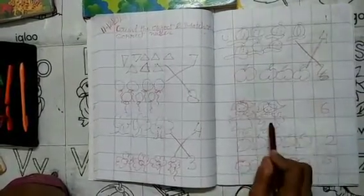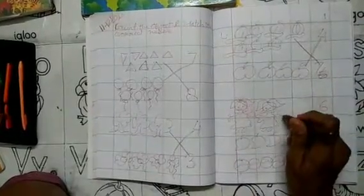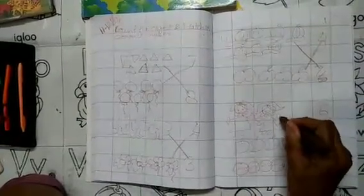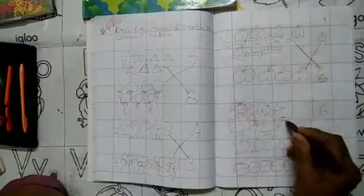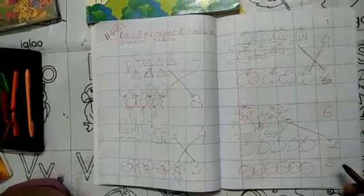1, 2 dolls. Where is the two number? Match the two dolls, two number. 1, 2, 3, 4, 5. Five mangos. Where is the five number? Match the five mangos, match the five number.